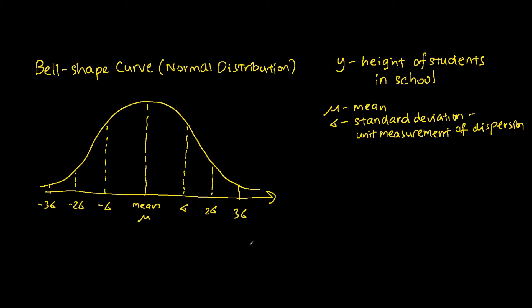Suppose I have a random variable that represents the height of students in school. In this bell-shaped curve there are two things to notice. Number one, mu — mu is represented as the mean. Sigma is the standard deviation, which measures the dispersion, or is the unit measurement of dispersion.